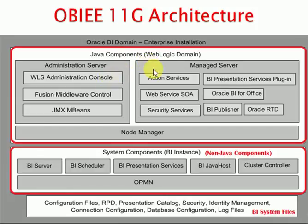There are two types of components. One is Java components, which are mainly related to the WebLogic Server. The other is BI server components, which are called non-Java components — the BI components are called non-Java components.